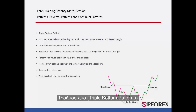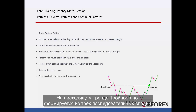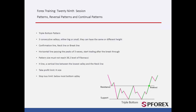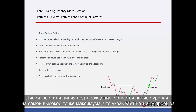Triple bottom patterns: On a downward trend, a triple bottom pattern is formed by three consecutive valleys with different or the same height and width. The neckline or confirmation line is a level line on the highest peak point, which indicates the breakout point.